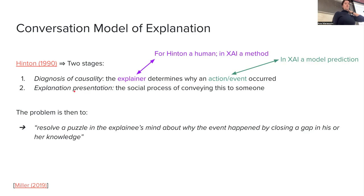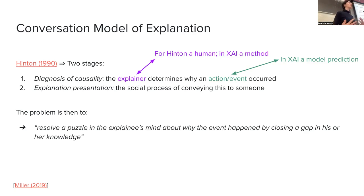The second stage is explanation presentation — a social process of conveying this to someone — which is very different. This very much depends on the person we are conveying the information to. In your conversations with different people, you tailor the same information such that it comes across better — whether you are talking to a high schooler about AI, your parents about AI, or your peers in this room, you use completely different language, although you might be explaining exactly the same thing.